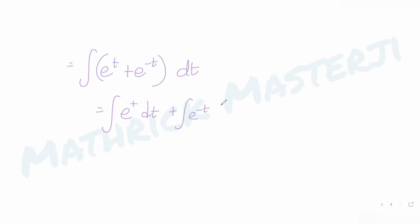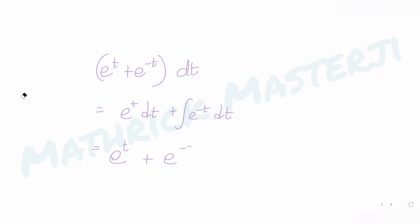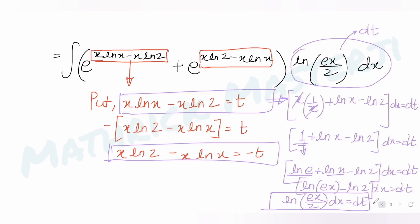Evaluating: the integral of e^t dt is e^t, and the integral of e^(−t) dt is e^(−t) divided by the coefficient of t, which is −1. So that gives e^t + e^(−t)/(−1) plus c, which simplifies to e^t − e^(−t) plus c.